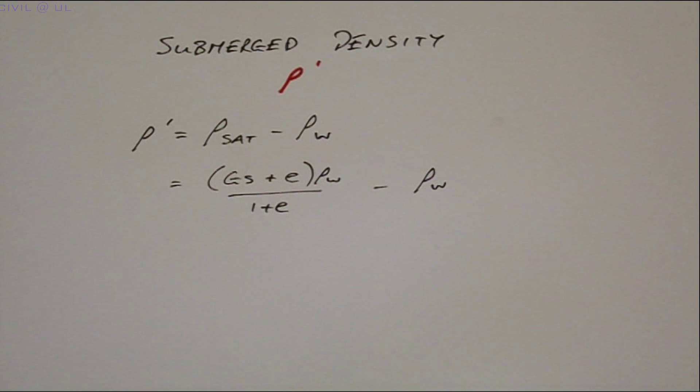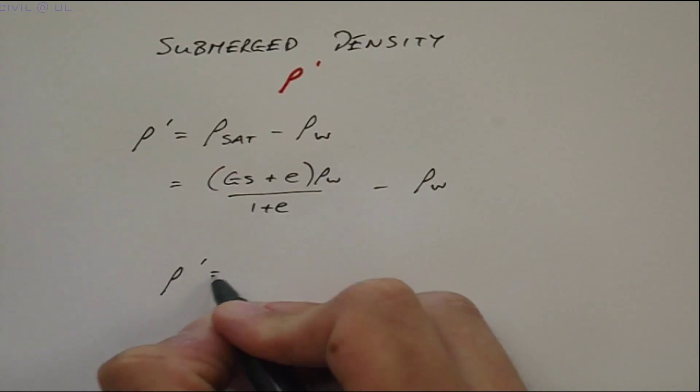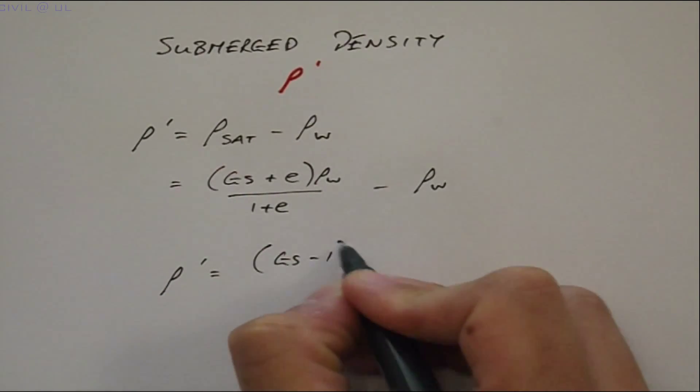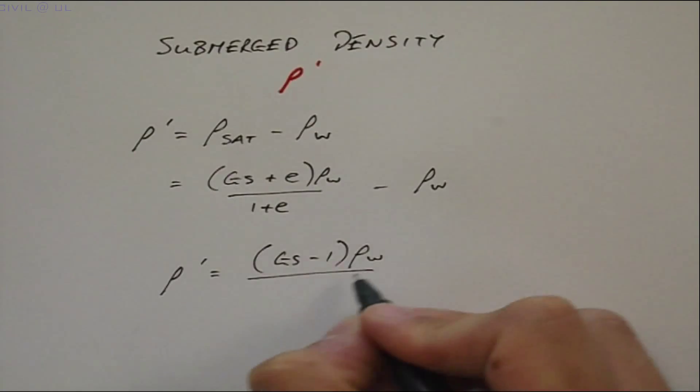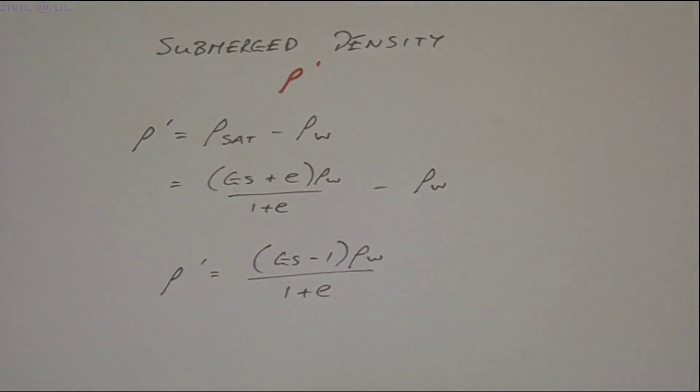When worked through, you should get that the submerged density is equal to GS minus 1, all multiplied by ρW, divided by 1 plus E.